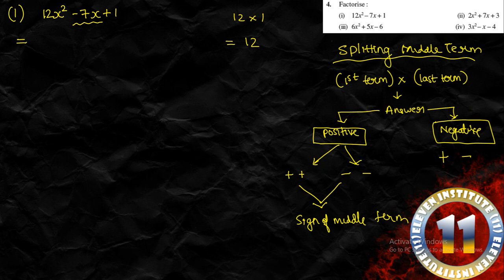When the product is negative, you have to decide which factor will be the larger number and which will be the smaller number — that again depends on the sign of the middle term. If the middle term is positive, the larger factor will be positive. If the middle term is negative, the larger factor will be negative. Keep this in mind; if anything is not clear you can re-watch this portion.